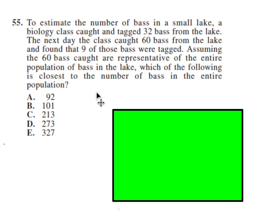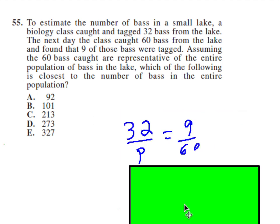Number 55 is a pretty standard question on the ACT. Probably one out of every three tests has this. It's basically called catch, tag, and release. Let me give you all the information here. So there's a pond that has some fish in it, and we don't know how many fish are in there. They want to get an estimate. So I'm going to let P stand for the population of the fish in the pond. This is what we're trying to figure out.